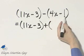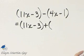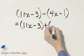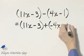So the opposite of this polynomial will be the opposite of every single term within this polynomial. So it would be negative 4x and then plus 1.